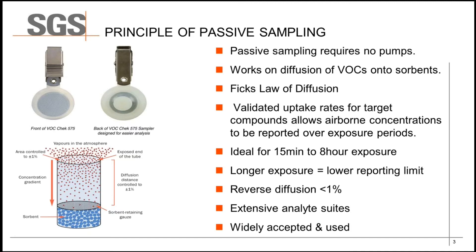Using Fick's law of diffusion, the longer a passive sampler is deployed, the lower the reporting limit. That being said, there is a limit to the time a sampler should be deployed. The time limit is based on when back diffusion starts to become significant and will affect the accuracy of the result. However, the capacity of passive samplers per amount of sorbent is much greater than that of active samplers. With active sampling, airflow through the tube displaces VOCs along the sorbent bed and eventually compounds will travel the entire length of the sorbent bed and exit the tube.